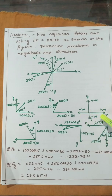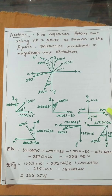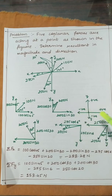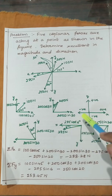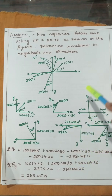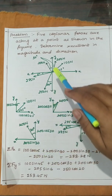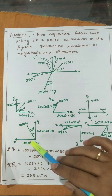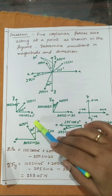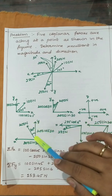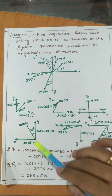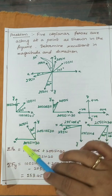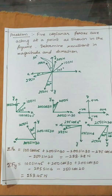The sign convention is: force acting towards the right (positive x direction) is positive; towards the left is negative. Force in the upward direction is positive; downward is negative. The next 200 N force at 30 degrees along the y direction gives a y-component of 200 cos 30 and an x-component of 200 sin 30.